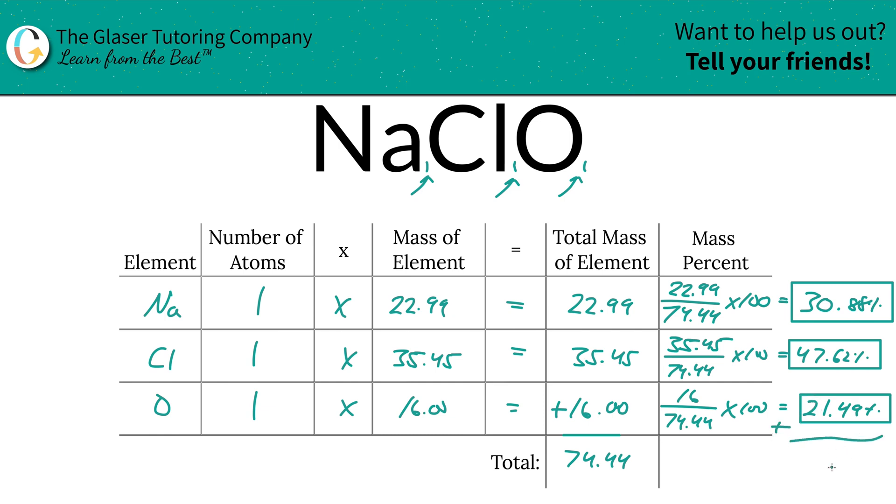So just to check yourself here when you calculate all these percentages, that's 21.49% for oxygen. It should equal 100%. And that's what I want for you on your next test, 100.